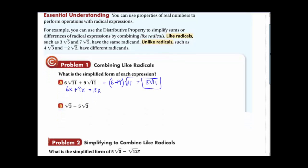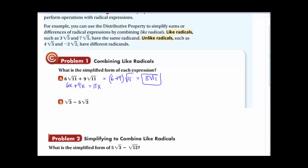Subtraction works the same way. If we have radical 3 minus 5 radical 3, we rewrite radical 3 as 1 radical 3, then factor out the radicand: we get 1 minus 5 in parentheses, times radical 3. 1 minus 5 gives us negative 4, so the answer is negative 4 radical 3. We add the numbers in front of the radicand and keep the radicand itself.